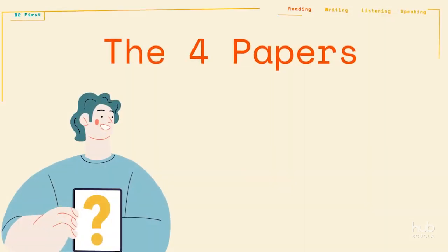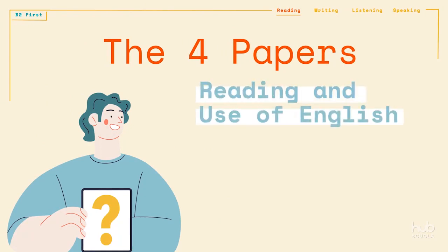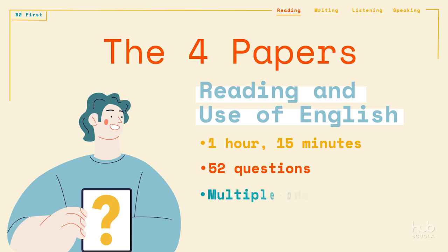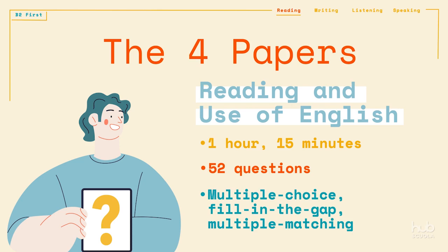The first paper, Reading and Use of English, takes approximately 1 hour and 15 minutes to complete. It is comprised of 52 questions in the form of multiple choice, fill-in-the-gap and multiple matching. This paper is designed to test two skills: your reading skills, as well as your skills in understanding and applying the structure and grammar of the English language.